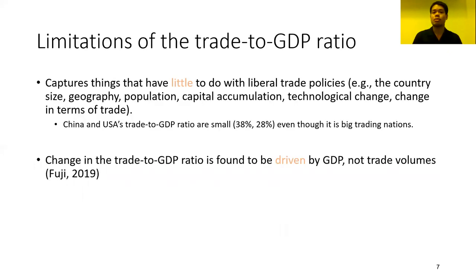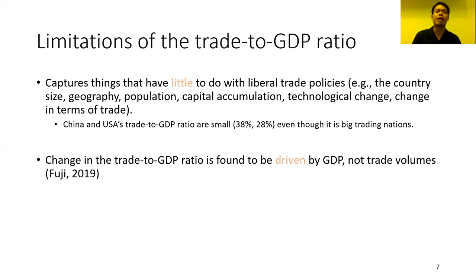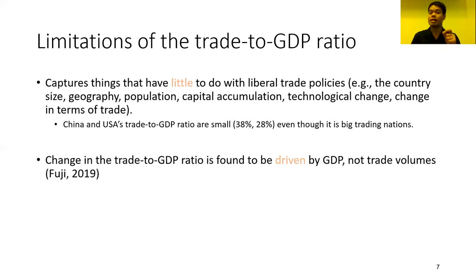The research question is whether the findings of multi-country studies reflect the limitations of the commonly used openness indicator — the trade-to-GDP ratio. The trade-to-GDP ratio may capture things that have little to do with liberal trade policy, such as country geography, population, capital accumulation, and so on. A recent paper by Fuji in 2019 found that for Japan, the trade-to-GDP ratio is driven by GDP — by the denominator — rather than by trade volume.